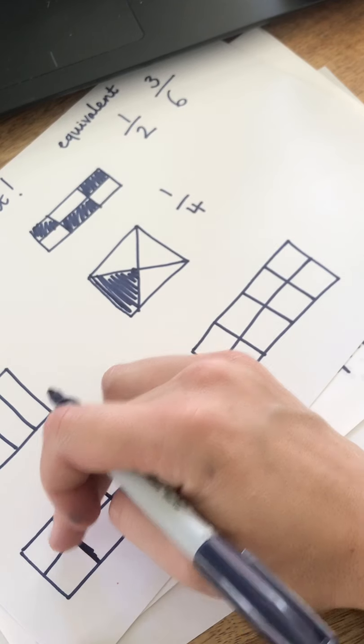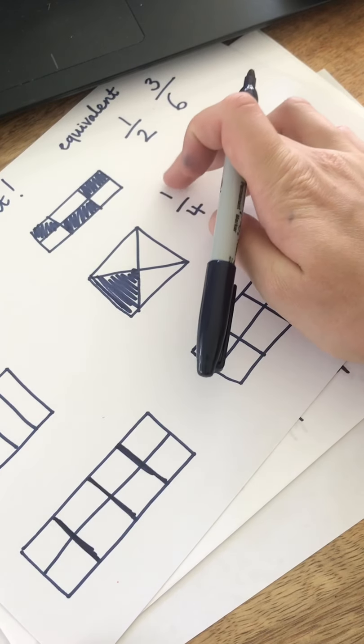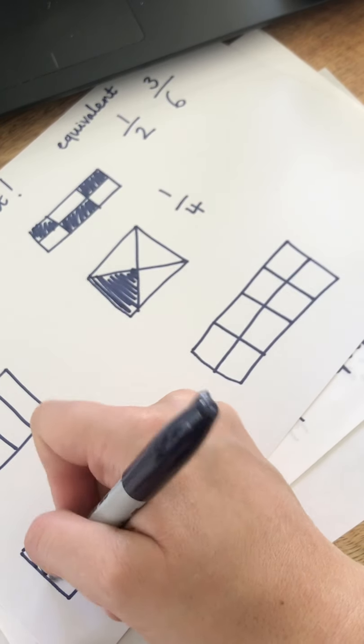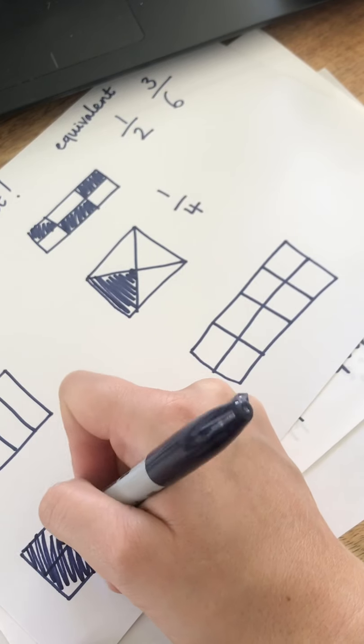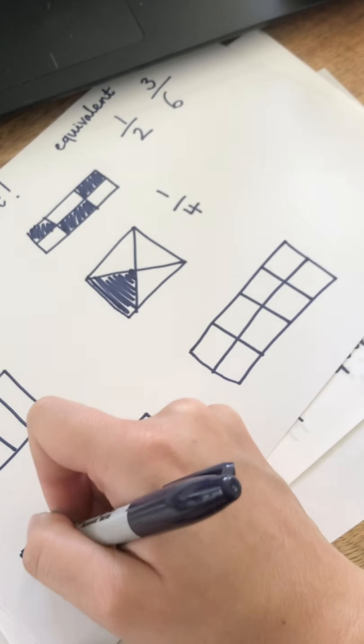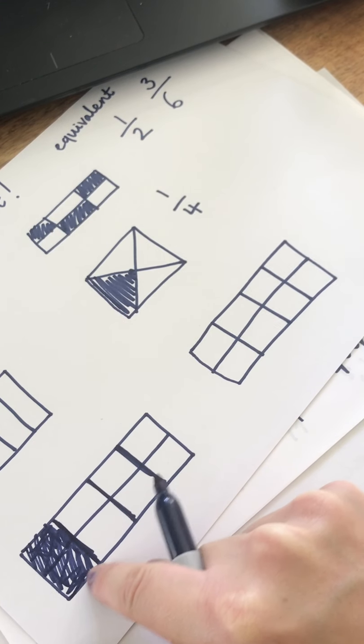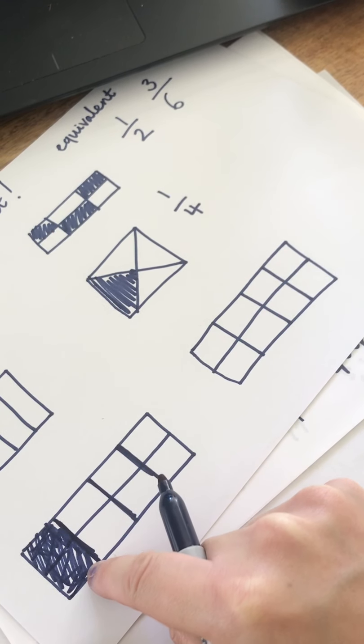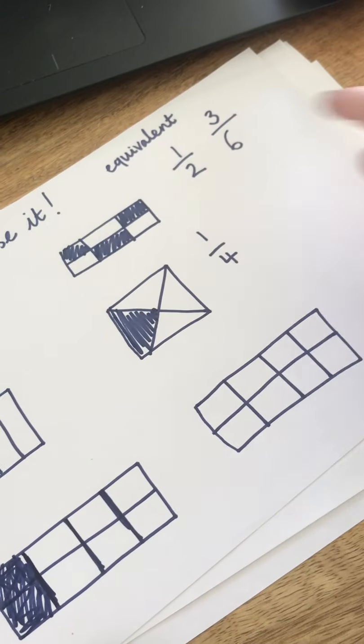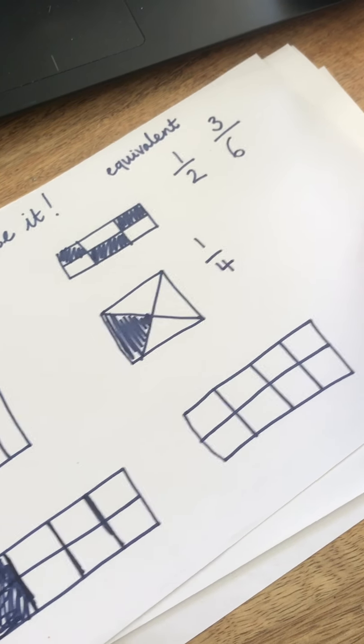And I only need to colour in one part of it. So if I coloured in that whole part here, there's four equal parts and one part has been coloured in. Or, you can use my little trick, the equivalent fraction trick, like we did a second ago.